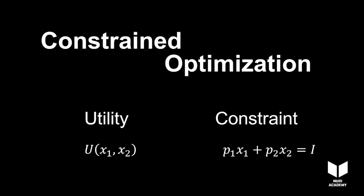Put simply, we're looking for the quantities of good 1 and good 2 that give you the highest level of satisfaction and that you can afford. Mathematically, we want to maximize the consumer's utility function subject to a constraint.